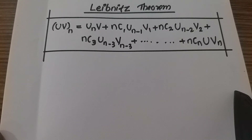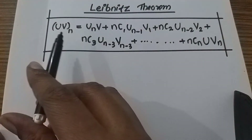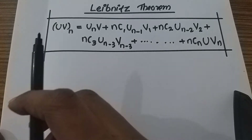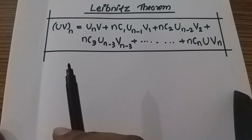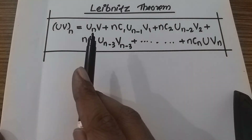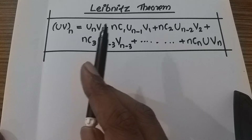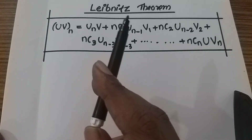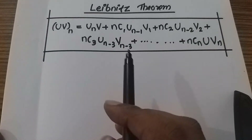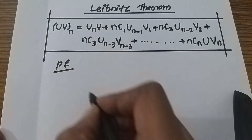We have the binomial theorem. We have to prove this theorem. The statement is: the nth derivative of uv equals the nth derivative of u times v, plus nC1 times the (n-1)th derivative of u times the first derivative of v. We will use Leibniz's theorem with the product rule.